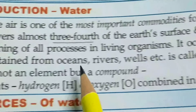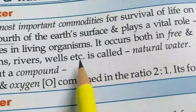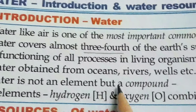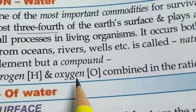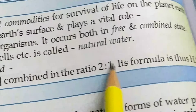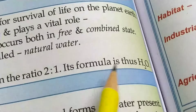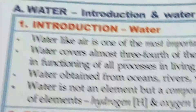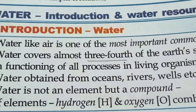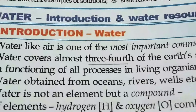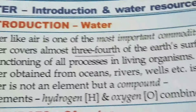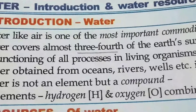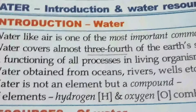Water obtained from oceans, rivers, wells, etc. is called natural water. Water is not an element but a compound of the elements hydrogen and oxygen, combining in the ratio of 2:1. Its formula is H₂O. Why is water called a compound and not an element? Because two different elements combine in a fixed ratio to form water — that's why water is a compound, not an element.